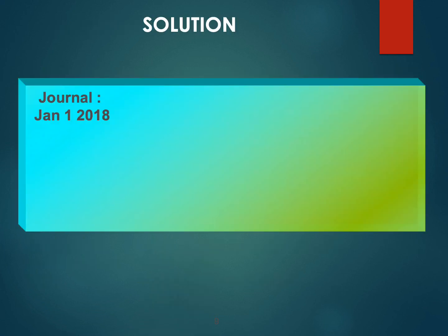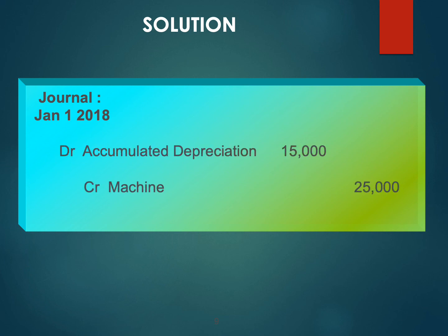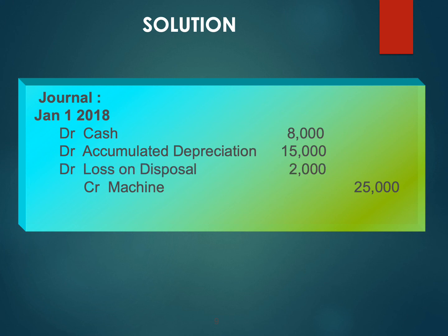In terms of the journal entry: credit Machine 25,000, debit Accumulated Depreciation 15,000, debit Cash 8,000, and debit Loss on Disposal 2,000.